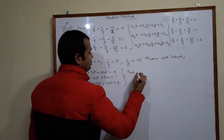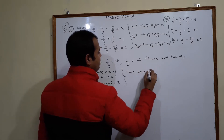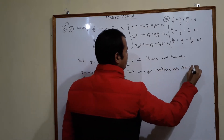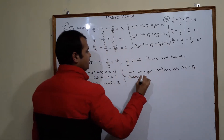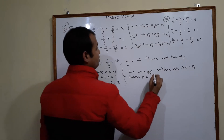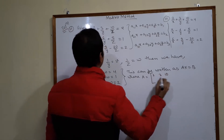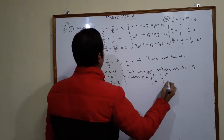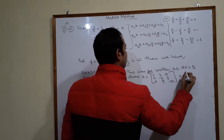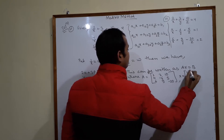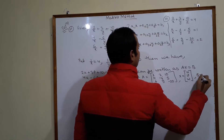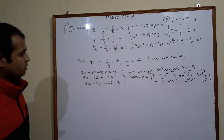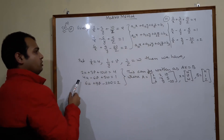This can be written as AX = B, where A = [[2, 3, 10], [4, -6, 5], [6, 9, -20]], X = [u, v, w], and B = [4, 1, 2]. So first you need to reduce the system into this form, then write it in matrix form.